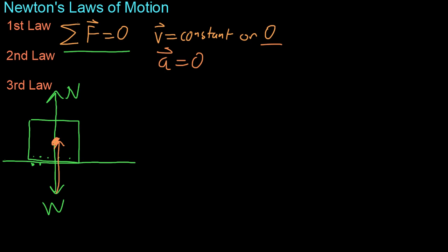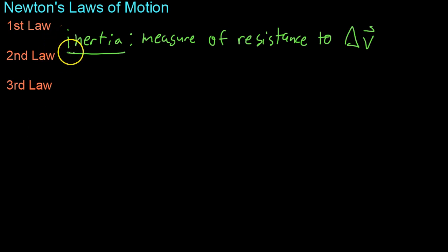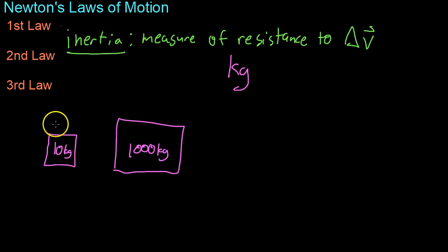Now, the first law has to do with inertia, which is basically a measure of an object's resistance to change in velocity. And this is usually measured in kilograms. So, if you have a block that weighs 10 kilograms, it's going to be a lot easier to move than a block that weighs, say, 1,000 kilograms. Basically, the same force will move this block easier than it will the large block. And that is sort of, we'll cover that more in depth with his second and third law.